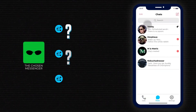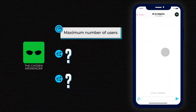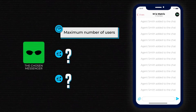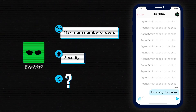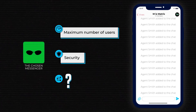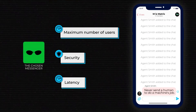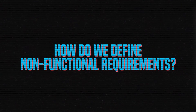Non-functional ones would tell us how many users an application can handle at a time without helplessly freezing. Should we store all data or remove some for security purposes? What latency for messages is considered good? But who can tell us about those attributes, and how do we define non-functional requirements?